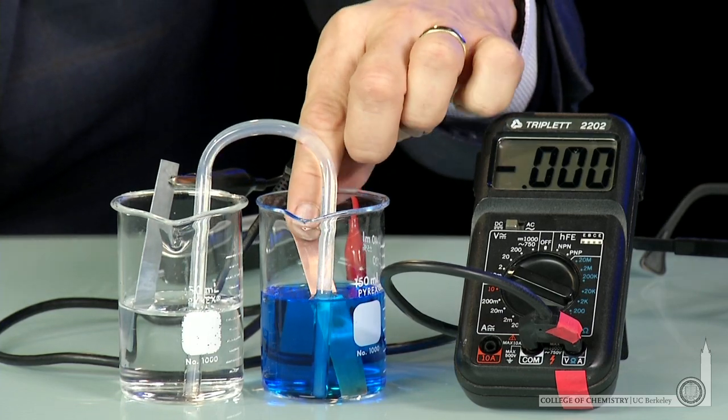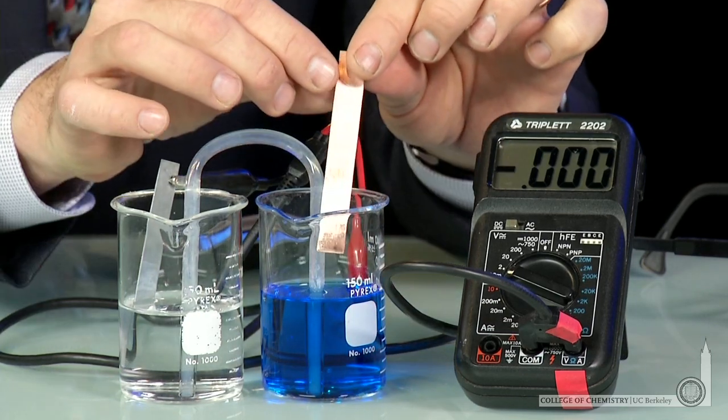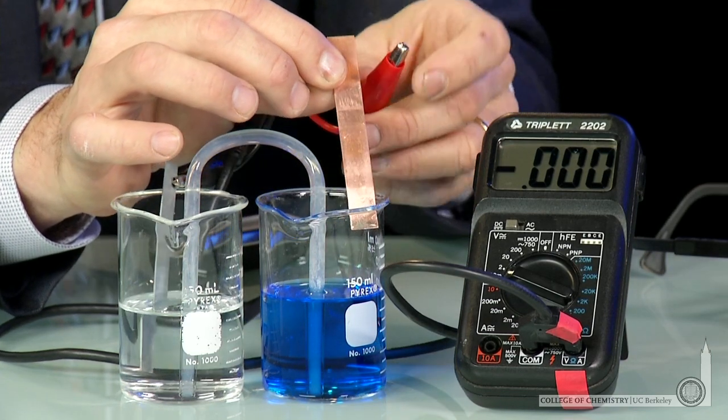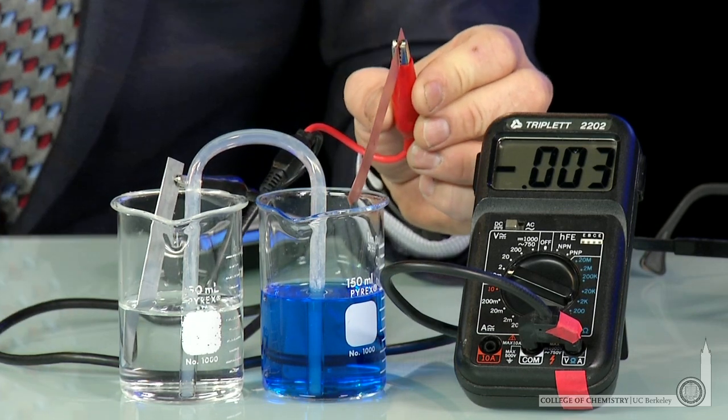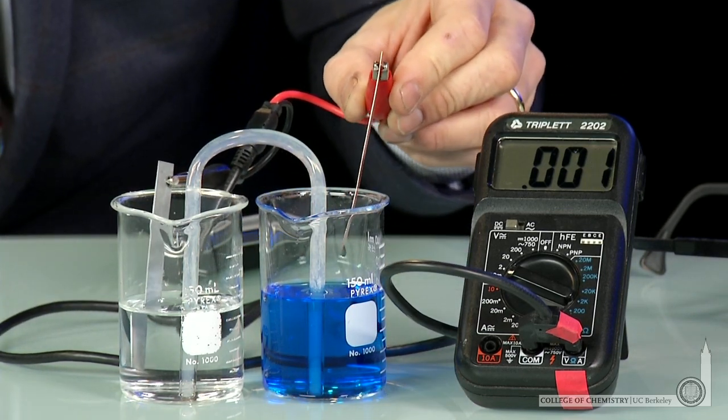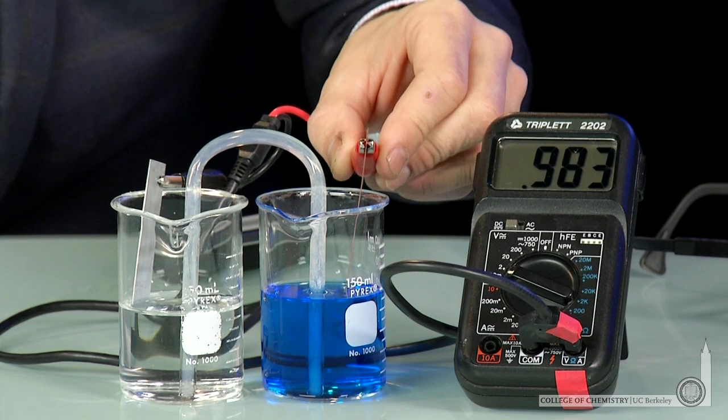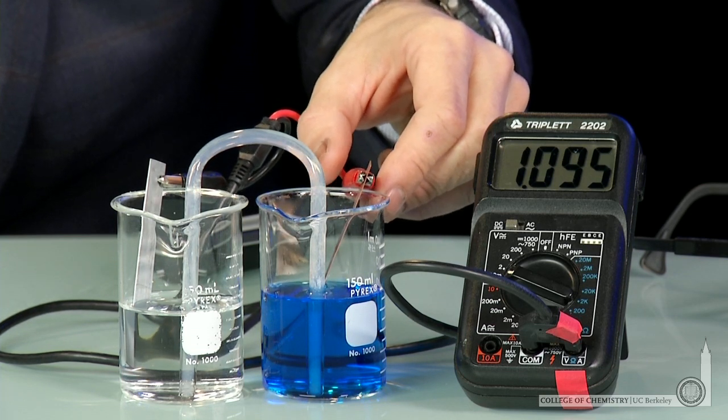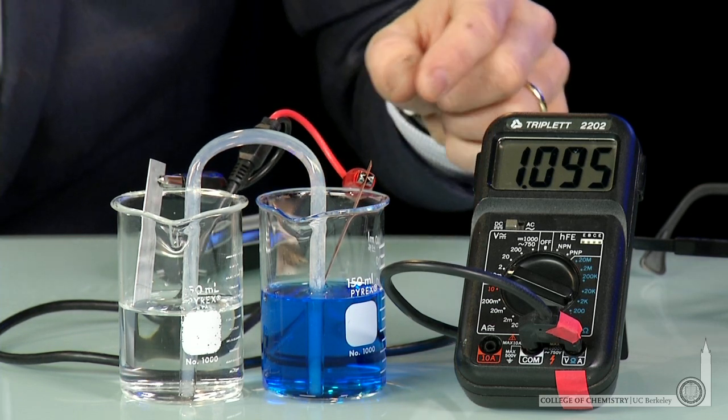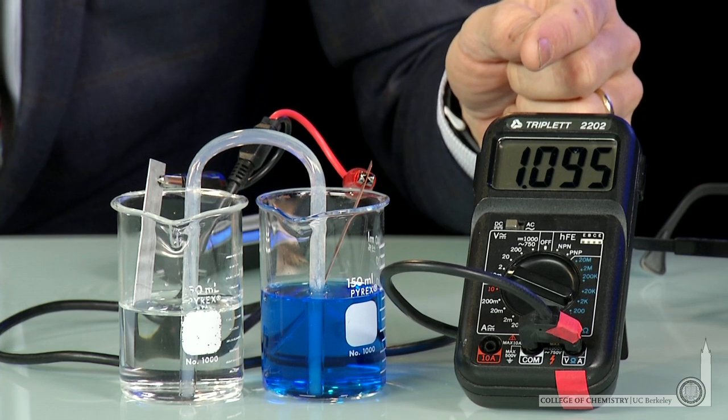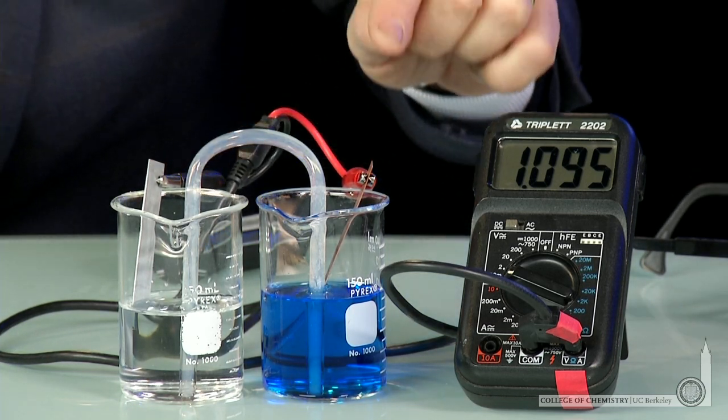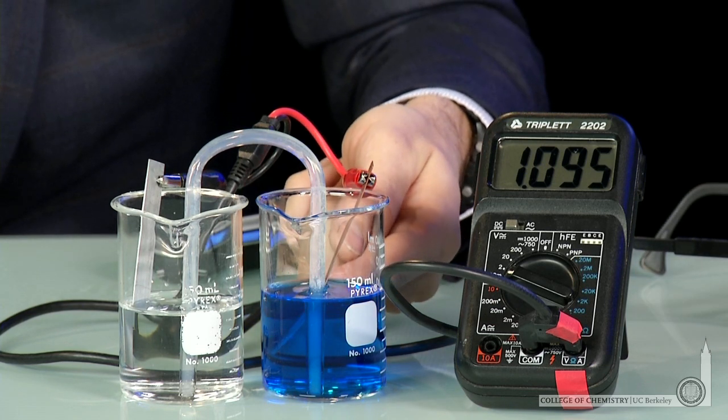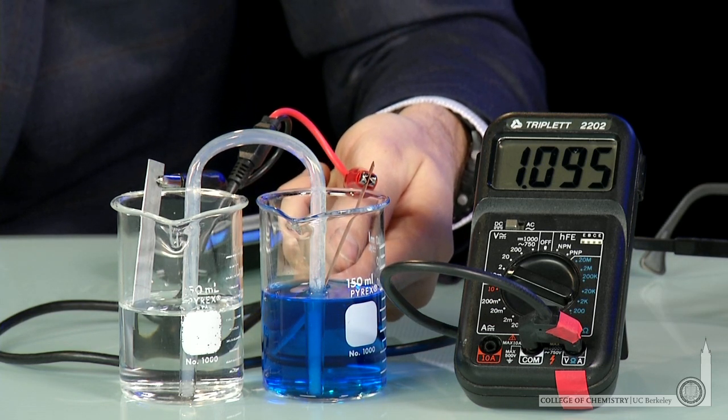Now if I take the copper electrode and I connect it to a voltmeter, notice right now my voltmeter reads zero. But if I put the voltmeter between them and immerse the copper electrode in copper solution, notice the voltmeter reads the potential for electrons to flow from the zinc metal to the copper metal and eventually to the copper ions in solution.